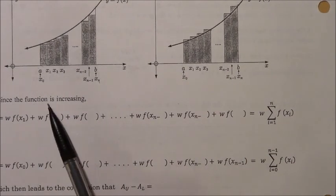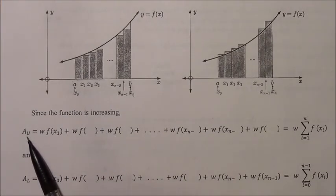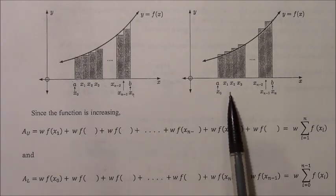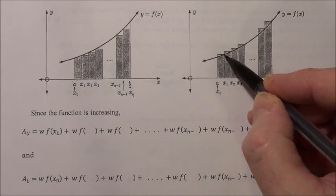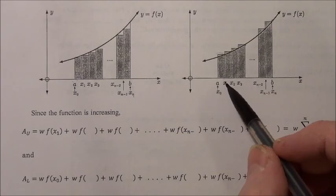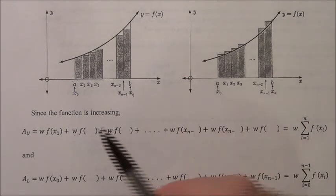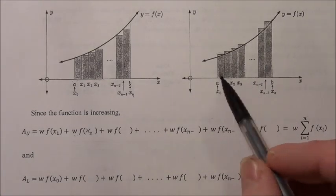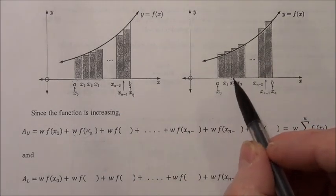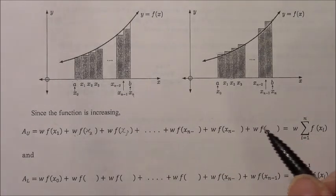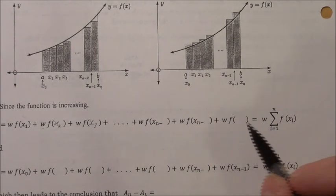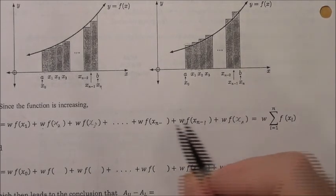If the function is increasing, I'll look at the upper rectangles first. I've got the width w multiplied by f(x₁), which gives the height of the first upper rectangle. Then I add w times f(x₂), which gives the height of the second rectangle. I continue the same way — w times f(x₃) — and the very last rectangle, since we're using the right edge of each rectangle, reaches x sub n, with the preceding ones being x sub n−1 and x sub n−2.